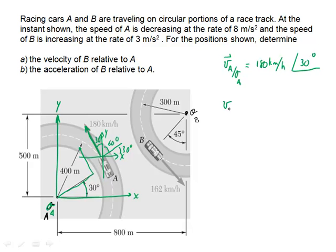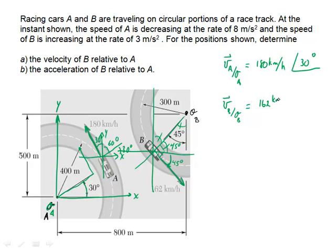The velocity of B, in a similar fashion with respect to its origin O sub B, goes in this direction. For the angles: here's x, here's y. If this is 45 degrees, this must also be 45 by alternate interior angles. This is 90 degrees, so this must be 45 degrees as well. We can see the velocity points below the x-axis at an angle of 45 degrees. So this is 162 kilometers per hour at an angle of minus 45 degrees, which is the same as 315 degrees. You can choose whichever coordinate system you desire.